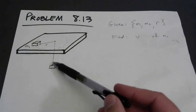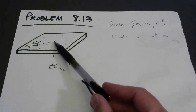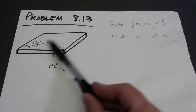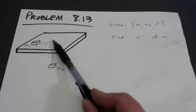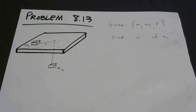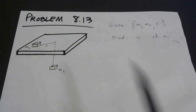Why would there be tension in the string? How could you establish that tension? There must also be tension here in order to accelerate this block towards the center. If this block is going around and around, we know it has an acceleration towards the center by virtue of being in circular motion, and that means there must be a centripetal force.